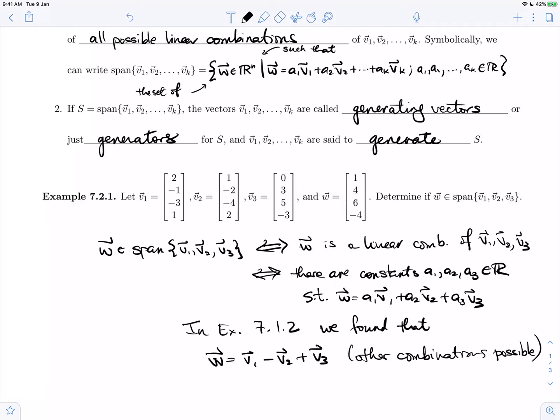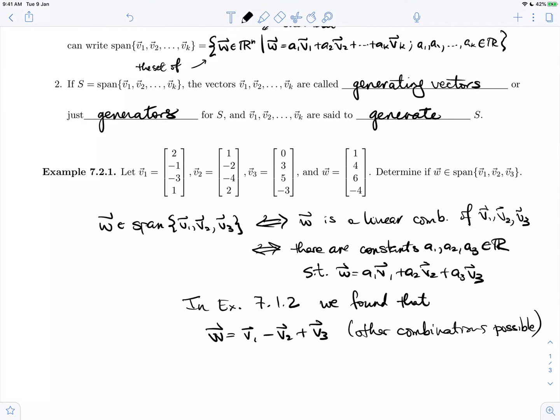Other combinations were possible, but in particular, w is a linear combination of these vectors. And that means that, since w is a linear combination of the generators v1, v2, v3, w is in the span.